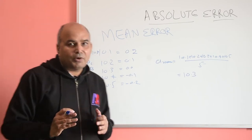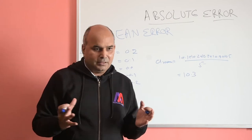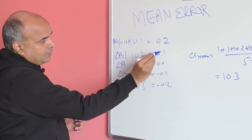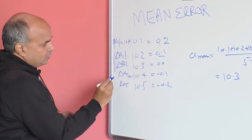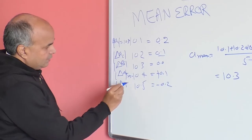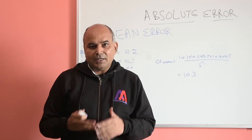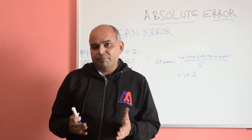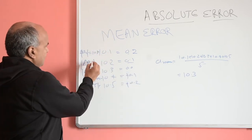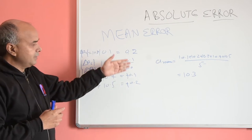When we talk about absolute error, we remove the negative sign. So the absolute errors become: |Δa1| = 0.2, |Δa2| = 0.1, |Δa3| = 0.0, |Δa4| = 0.1, and |Δa5| = 0.2. Absolute error must always be positive, and we denote it by putting a bar on both sides.